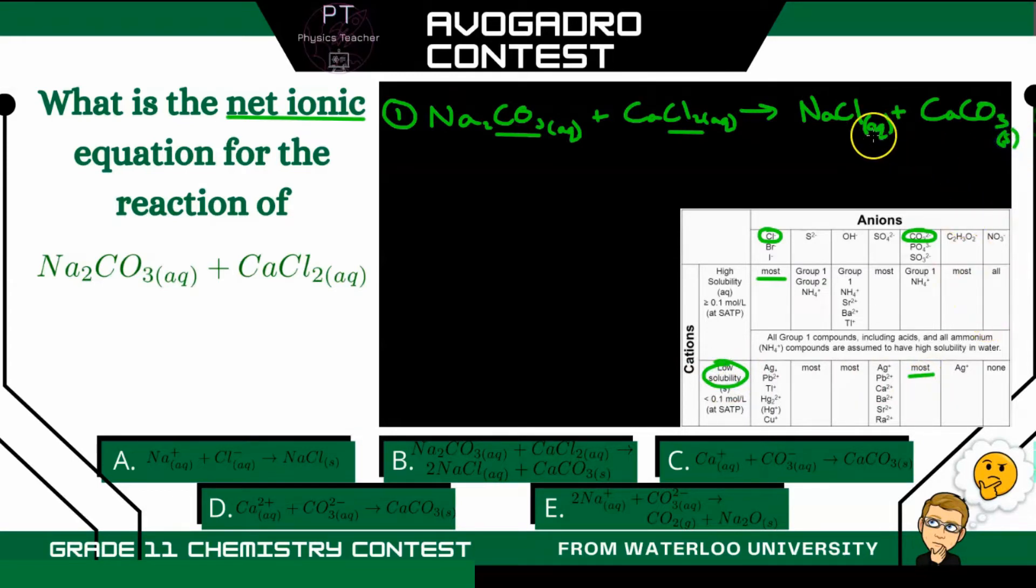So now that we've determined the states of our product, we also need to balance this equation. So here we have two sodium atoms, whereas here we only have one. So let's put a two here. All right, and then here we have two chlorines, two chlorines, one calcium, one calcium, one carbonate polyatomic ion, and over here one carbonate. So now it's balanced.